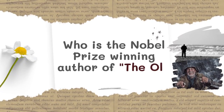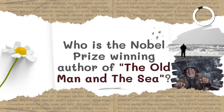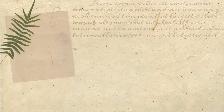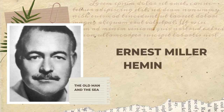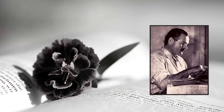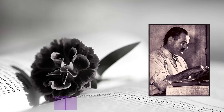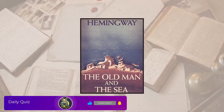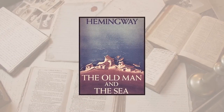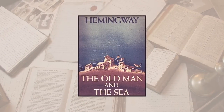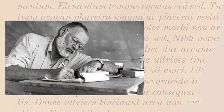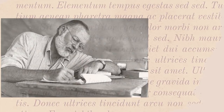Question number eight: who is the Nobel Prize-winning author of The Old Man and the Sea? The answer is Ernest Miller Hemingway. Hemingway served in World War One and worked in journalism before publishing his story collection In Our Time. He was renowned for novels like The Sun Also Rises, A Farewell to Arms, For Whom the Bell Tolls, and The Old Man and the Sea, which won the Pulitzer Prize in 1953. In 1954, Hemingway won the Nobel Prize.